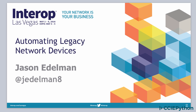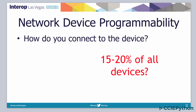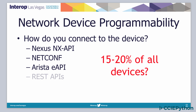Jason Edelman presented at Interop Las Vegas in 2016 and discussed automating legacy network devices. He discussed one of the issues you're going to encounter with network automation and device programmability: only a small percentage of network devices support a programmatic API. Nexus devices support the NX API, some devices support NetConf, Arista supports the eAPI, and some devices support REST APIs — but that only accounts for 15-20% of devices.